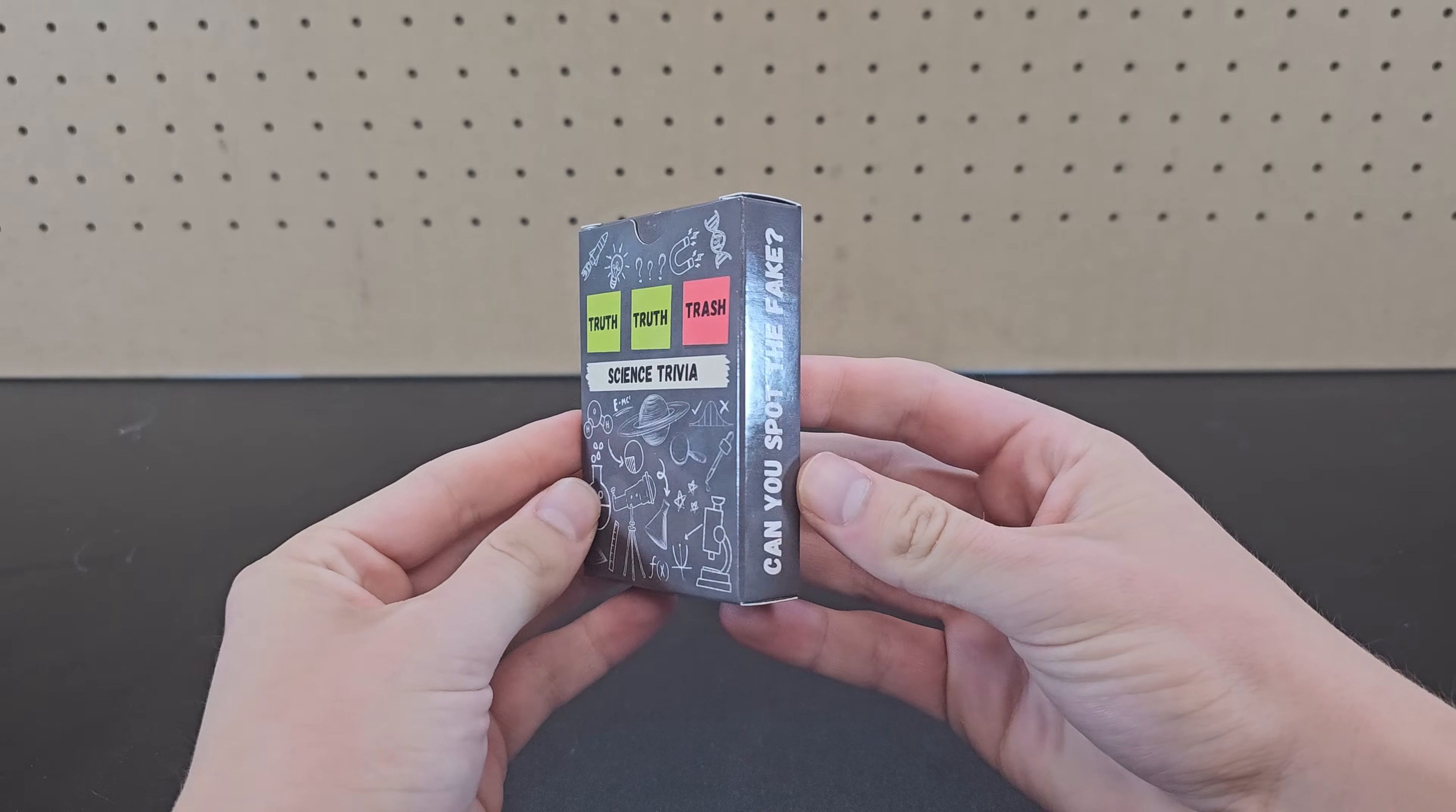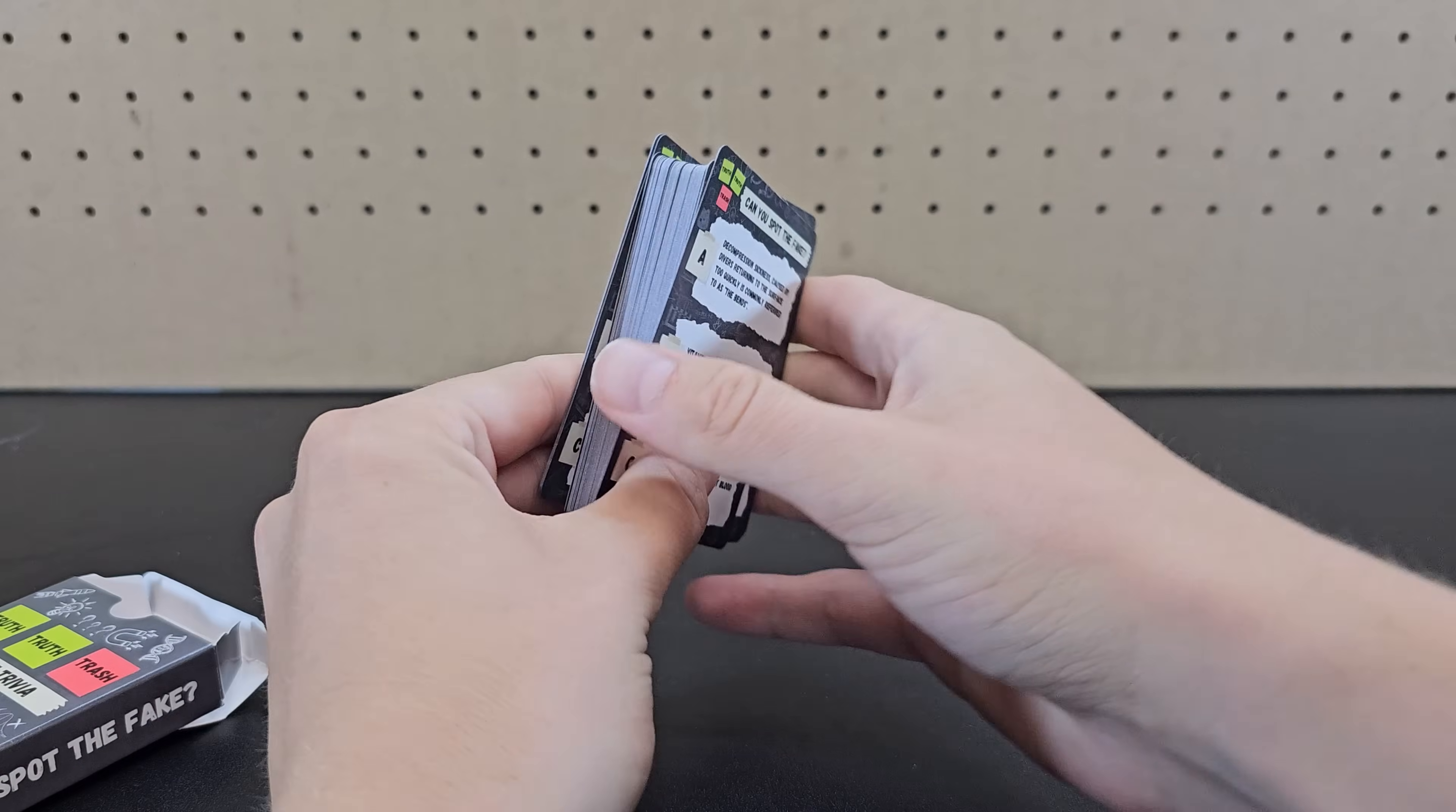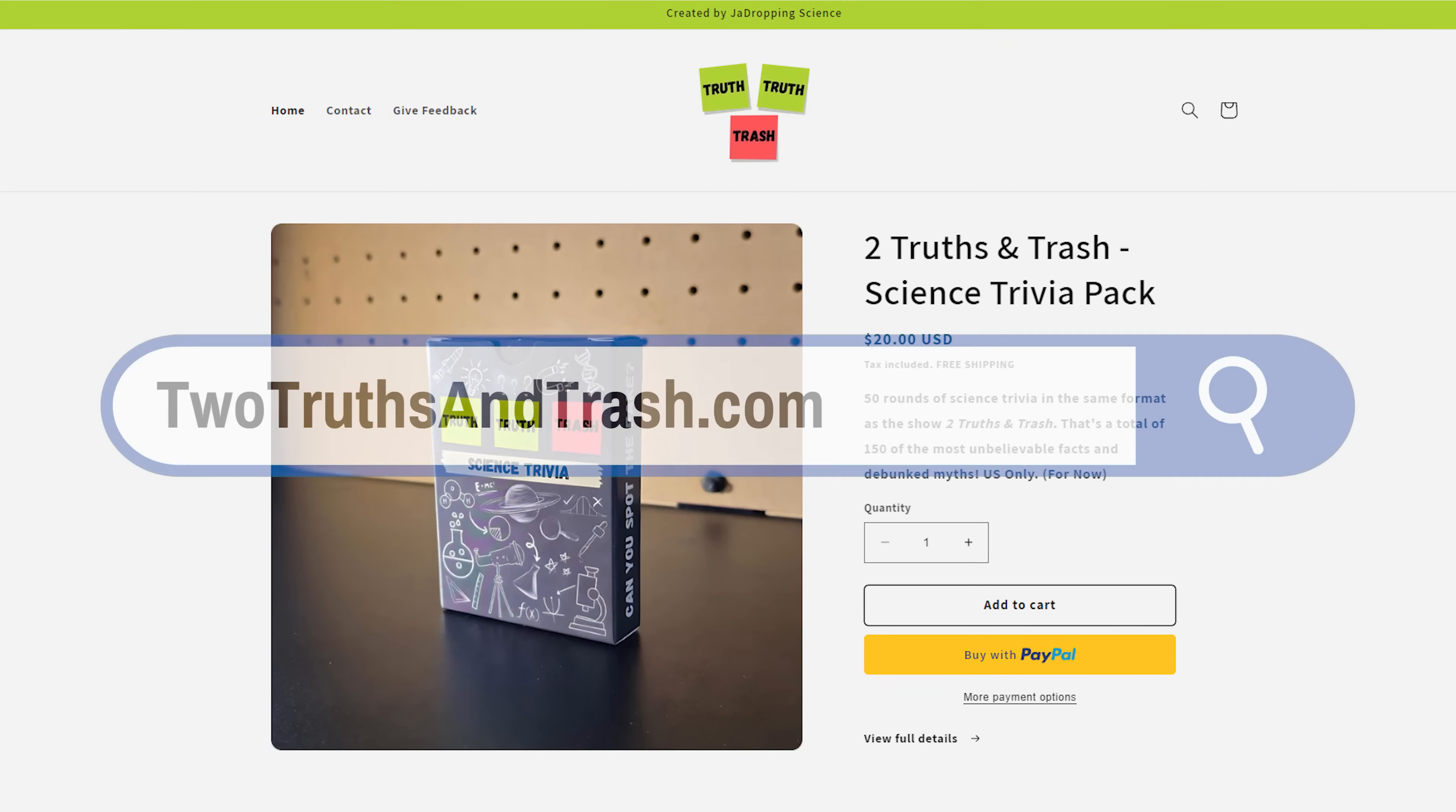I wanted to let you know this bonus round was taken from the example card on the back of my first ever merch item, a two truths and trash trivia deck with 50 new rounds. It's available now and if you're interested in getting one for yourself or a friend you can go to my website.